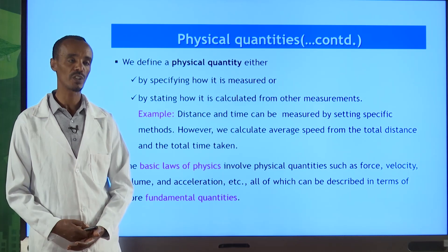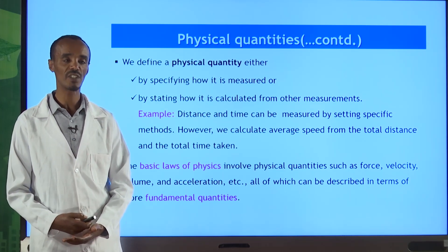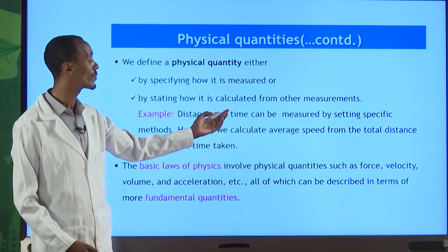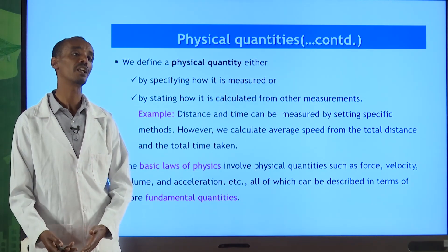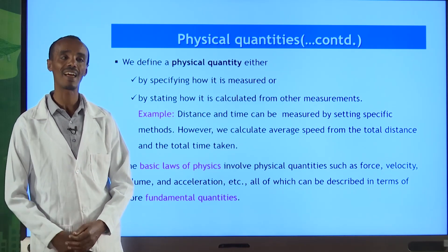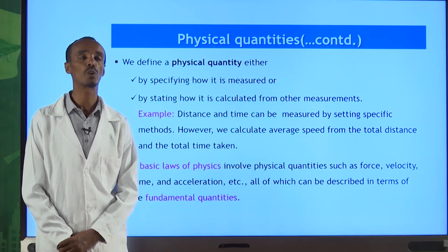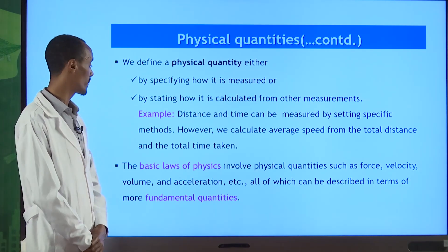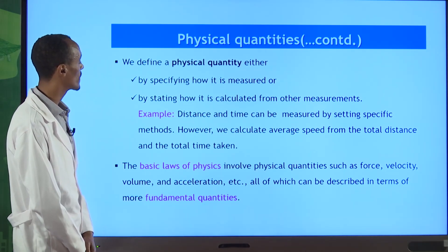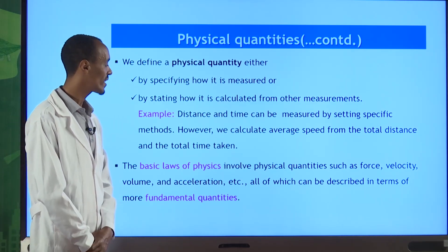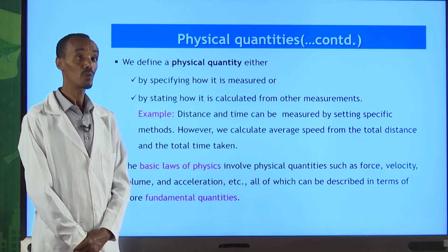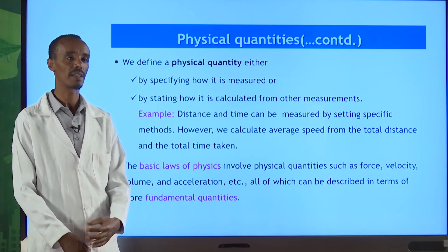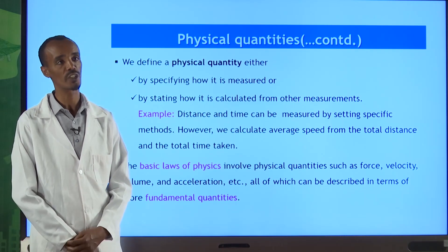But if you use those basic physical quantities to derive another physical quantity, you measure something, make a calculation, and find a new physical quantity — that is what we call derived physical quantities. For example, distance and time can be measured directly using specific instruments.